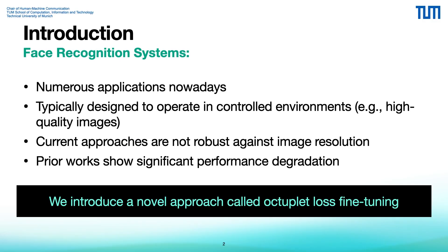Face recognition systems have numerous applications but are typically designed to operate in controlled environments with high-quality images. Current approaches are not robust against low resolution images, leading to significant performance degradation. Previous work showed that the popular ArcFace model with ResNet-50 backbone is particularly susceptible to low resolution images. We introduce a novel approach called Octoplet Loss fine-tuning that improves robustness against image resolution while maintaining performance on high resolution images.